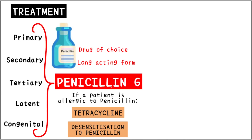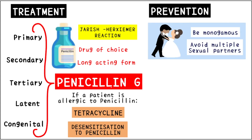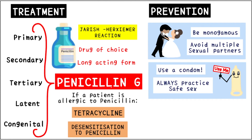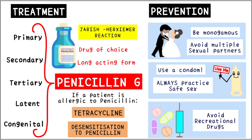An important part of treatment is a systemic reaction called the Jarisch-Herxheimer reaction, which we will look at in detail in another video. Syphilis is a disease that can be transmitted very easily. The best methods of prevention are practicing monogamy or simply avoiding multiple sexual partners. In cases where monogamy isn't favored, it is absolutely necessary to use a condom. Always practice safe sex. Another thing to avoid is recreational drugs, which can cause the spread of numerous infectious diseases including syphilis.